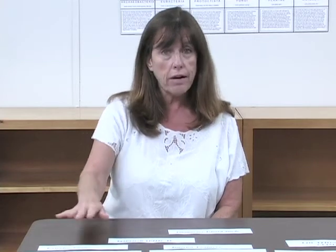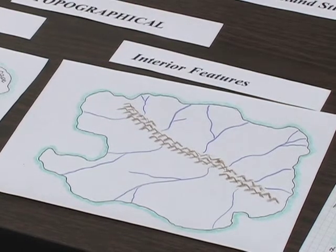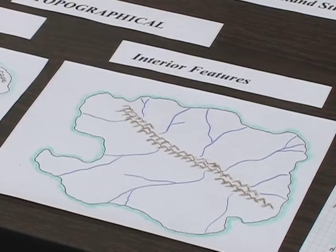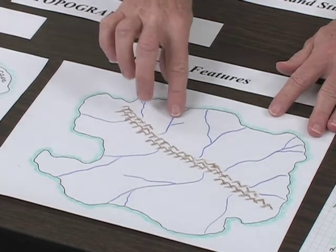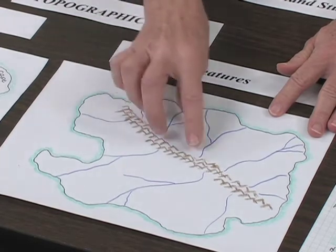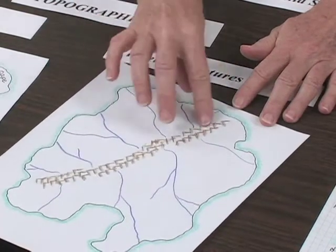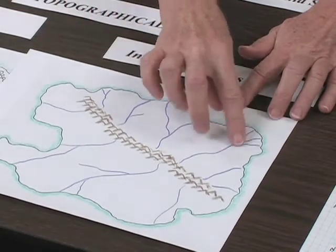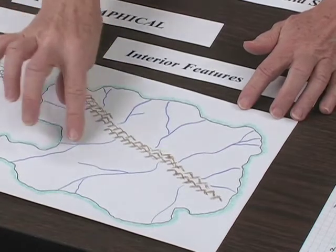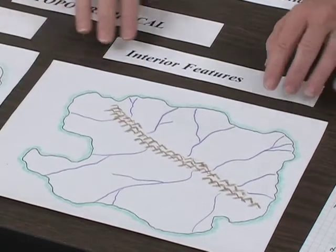If there are any little depressions, those will form lakes. Then they can trace another outline of their island, and you can show them different ways to indicate mountains. Once they have their mountains, they can start drawing rivers — always drawing them coming from the mountain to the coast, which means they'll have to rotate their drawing. You can show them a delta or tributaries, and even let them draw in little lakes. Now they have their island with both interior and exterior features.